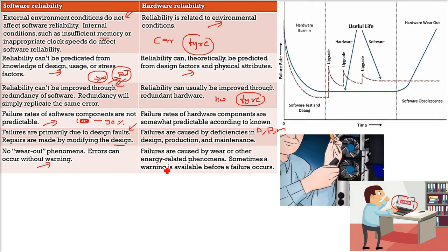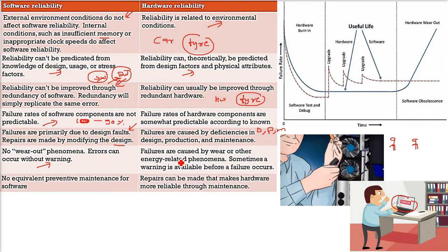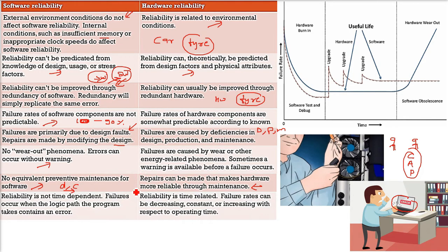Hardware reliability involves wear and tear — just as a person who is born must die, hardware machines also degrade. For software reliability, there is no equivalent preventive maintenance. In books, you will find only three types of software maintenance: perfective, adaptive, and corrective — there is no preventive maintenance. Why? Because when you are making a good design and writing good code and testing it properly, that itself is the preventive maintenance. But for hardware reliability, repairs can be made through maintenance to make hardware more reliable — for example, you can put grease or oil in your car so that it works fine.